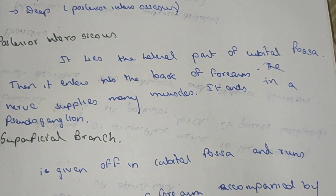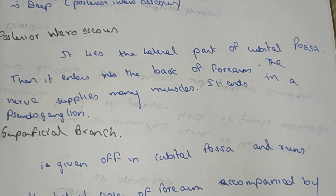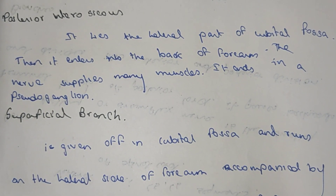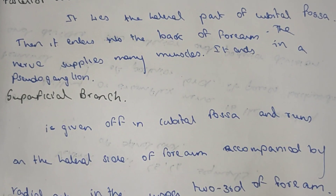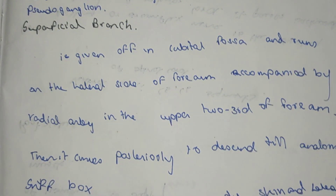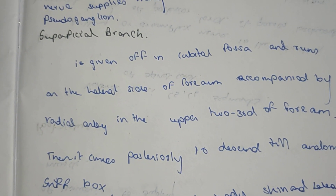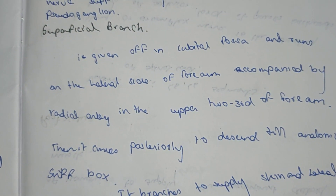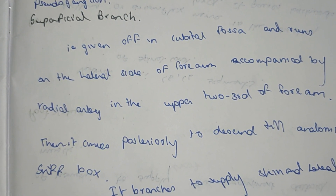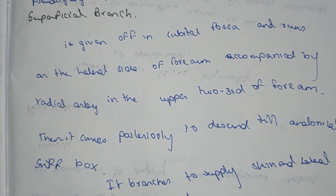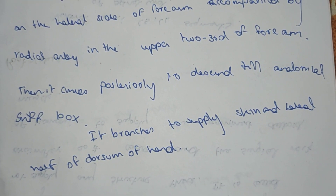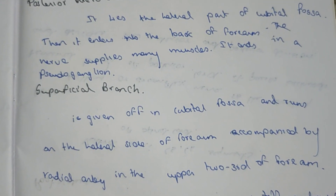The deep branch lies in the lateral part and enters back into the forearm, supplying many muscles and ending in the pseudo-ganglion. The superficial branch is given off in the cubital fossa on the lateral side of the forearm, accompanied by the radial artery along the upper two-thirds of the forearm, then descends to the anatomical snuffbox and branches to supply the skin of the lateral half of the dorsum of the hand.